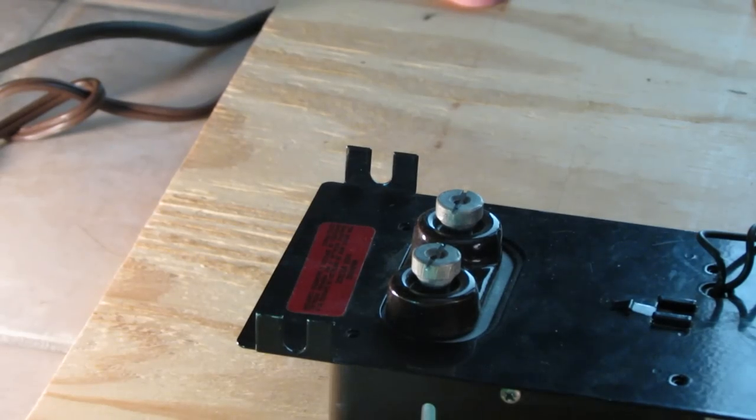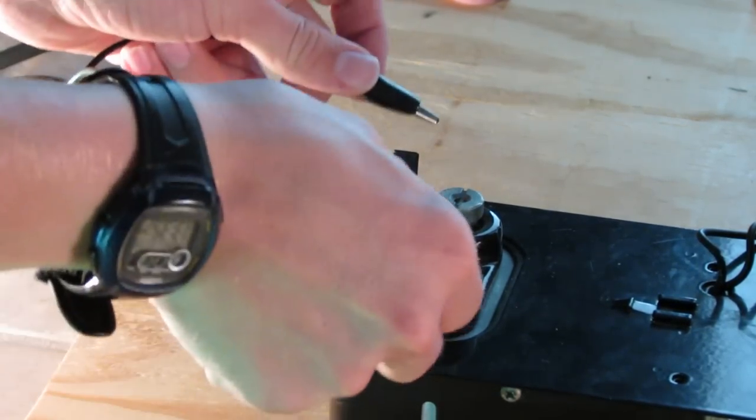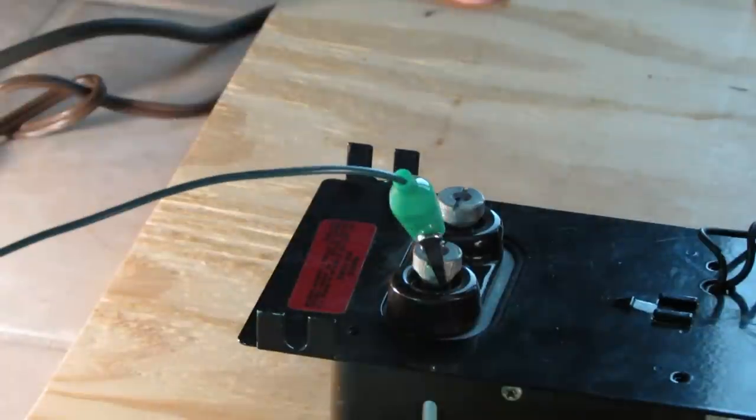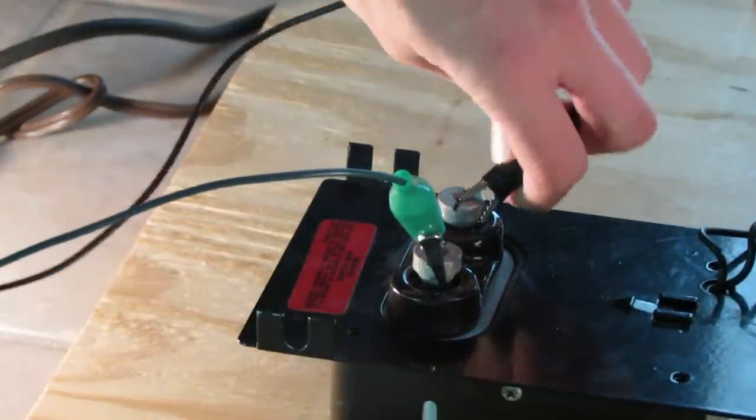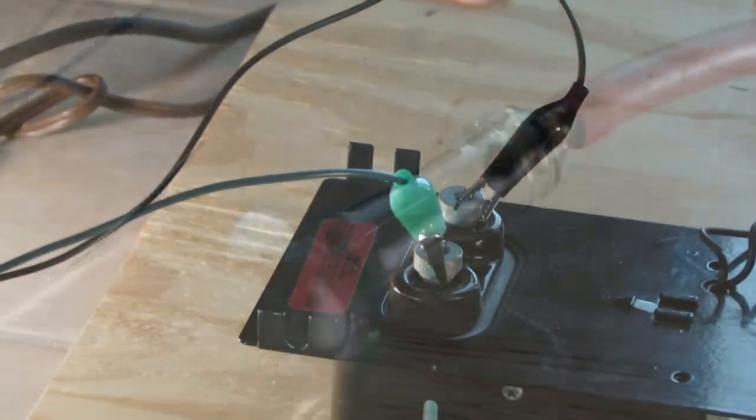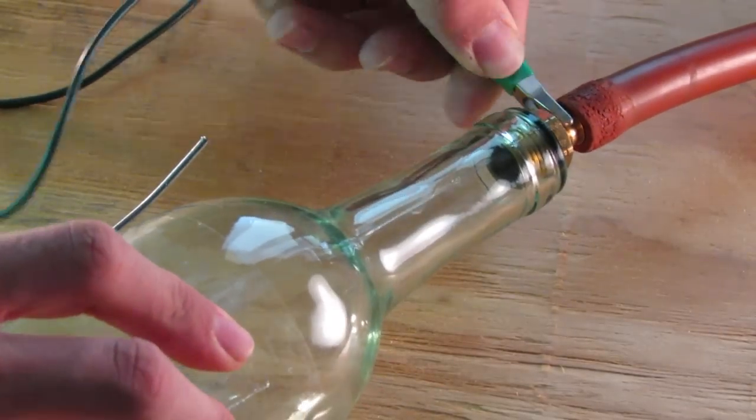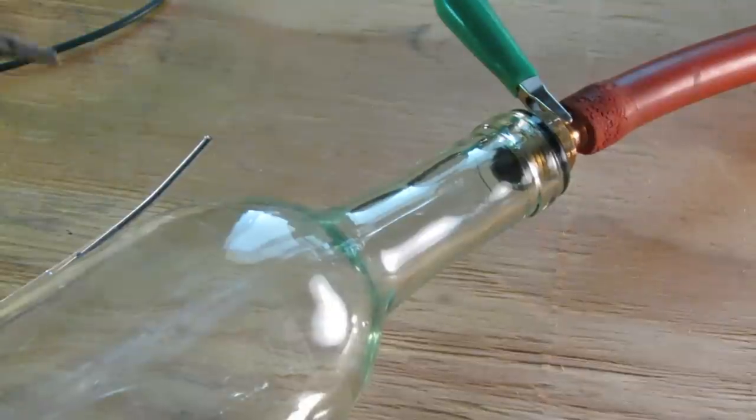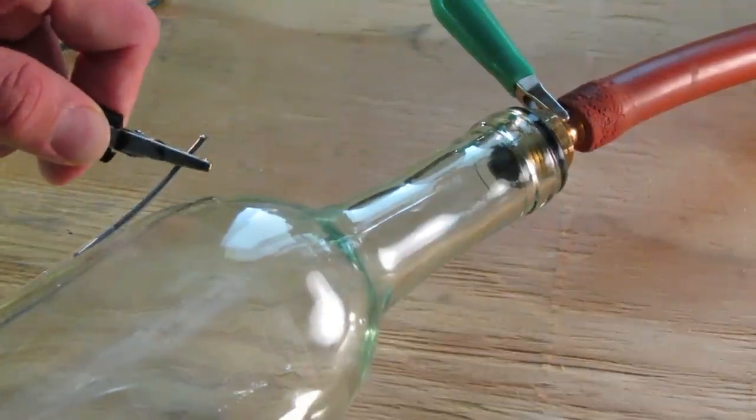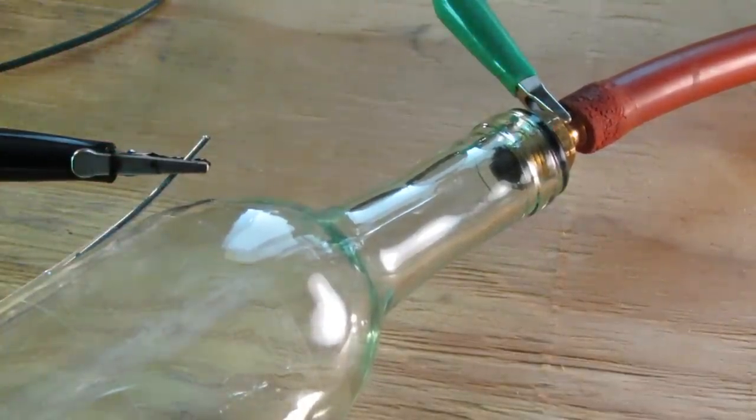Now it's time to power up the cathode ray tube. To do this, we need to attach some electrodes to the terminals of the oil burner ignition transformer. Next, we simply attach one of the other ends to an exposed piece of the hose barb, and the other to that wire we added into the wine bottle.